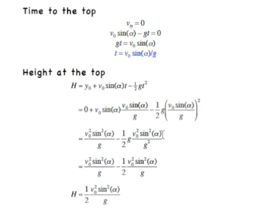so we have V0 sine alpha all squared divided by G squared, so our factor of G in the numerator and G squared in the denominator gives us just one factor of G in the denominator.